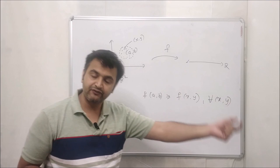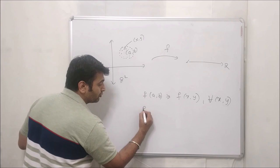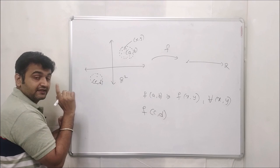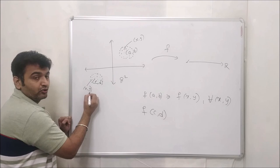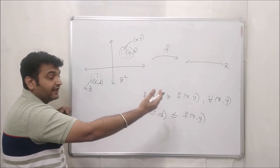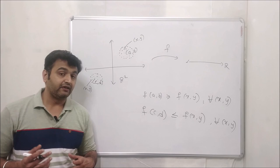The value f(a, b) is the local maximum value. The same notion goes for local minima. Suppose you take a point (c, d). We say the function has a local minimum value at (c, d) if you can find some neighborhood around (c, d) such that for any (x, y) in that neighborhood, its image is greater than or equal to f(c, d). That minimum value is f(c, d).